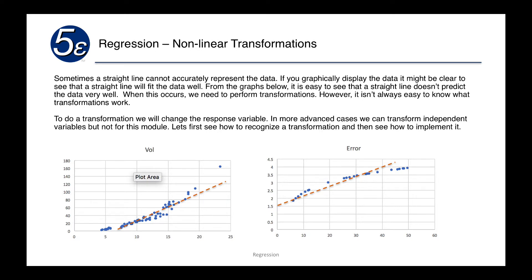When this occurs, we need to perform a transformation. However, it isn't always easy to know what transformations work well and what doesn't. To do a transformation we will need to change the response variable. In more advanced cases we can transform independent variables, but not for this module. Let's see how we can recognize a transformation and then see how to implement it.